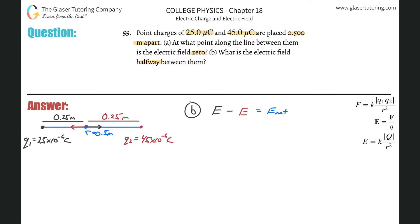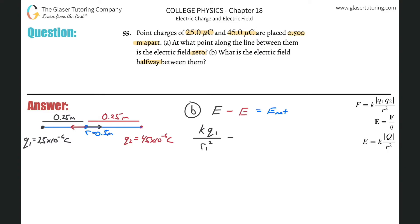The electric field produced at this point by each charge uses the formula E = kq/r². So we have: k times q₁ divided by r₁ squared, minus k times q₂ divided by r₂ squared. That equals the net electric field.